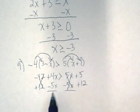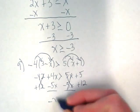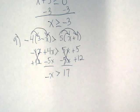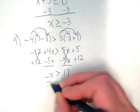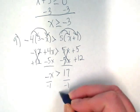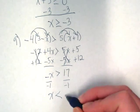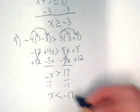That's going to leave me with negative x is greater than 17. It's not finished yet though because the x isn't alone yet. We have to divide by negative 1 which means we're going to flip our symbol and get x is less than negative 17.